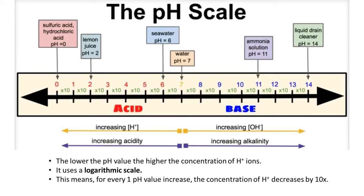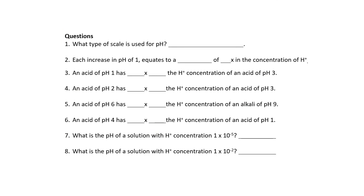The principle works the same for bases or alkalis too. Bases have a significantly lower concentration of hydrogen ions than hydroxide ions, and as you move along the scale for bases, the concentration of hydroxide also increases. For every pH increase of 1, the concentration of hydrogen ions decreases by a factor of 10. Pause the video and have a go at the questions using that principle.